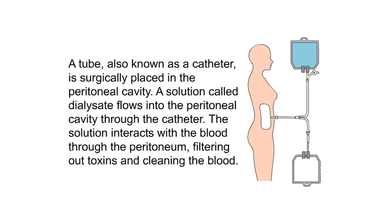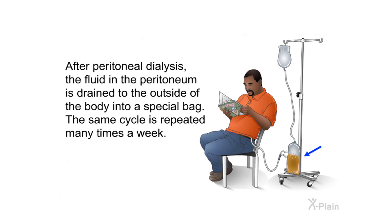Peritoneal dialysis uses the lining of the abdominal cavity — called the peritoneum — to clean the blood. A tube, known as a catheter, is surgically placed in the peritoneal cavity. A solution called dialysate flows into the peritoneal cavity through the catheter. The solution interacts with the blood through the peritoneum, filtering out toxins. Afterward, the fluid is drained outside the body into a special bag, and the same cycle is repeated many times a week.